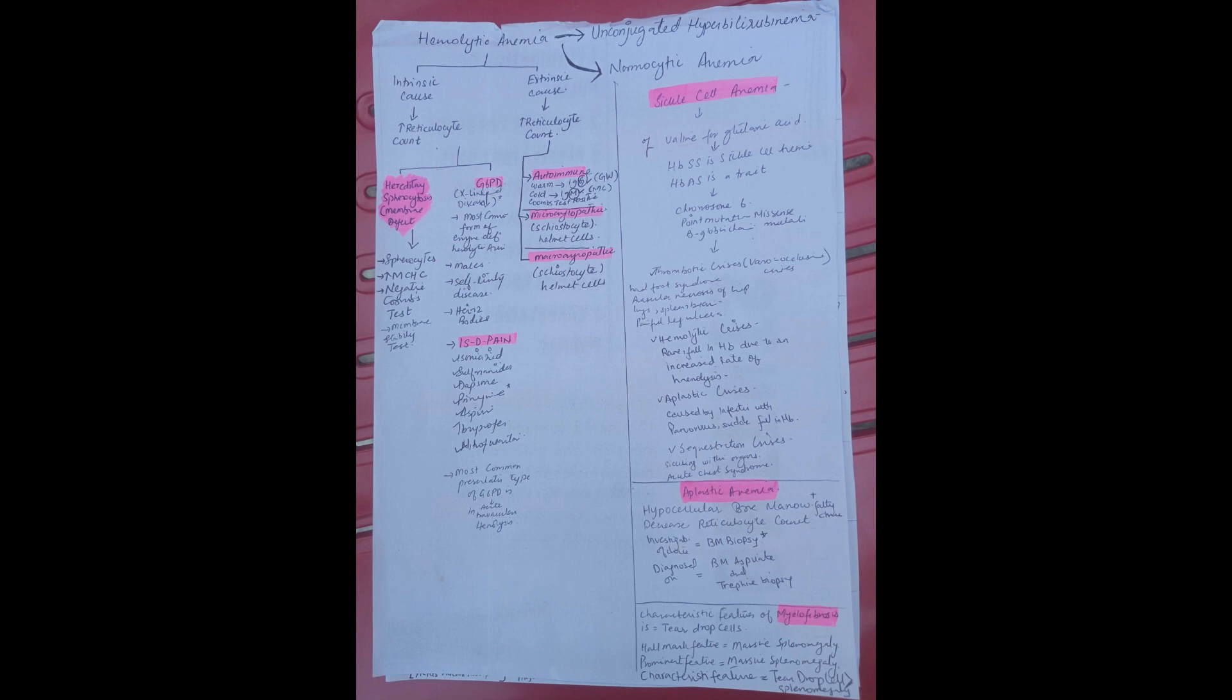The intrinsic are hereditary spherocytosis and G6PD deficiency. These are the intrinsic causes, and the extrinsic are autoimmune, microangiopathies and macroangiopathies.